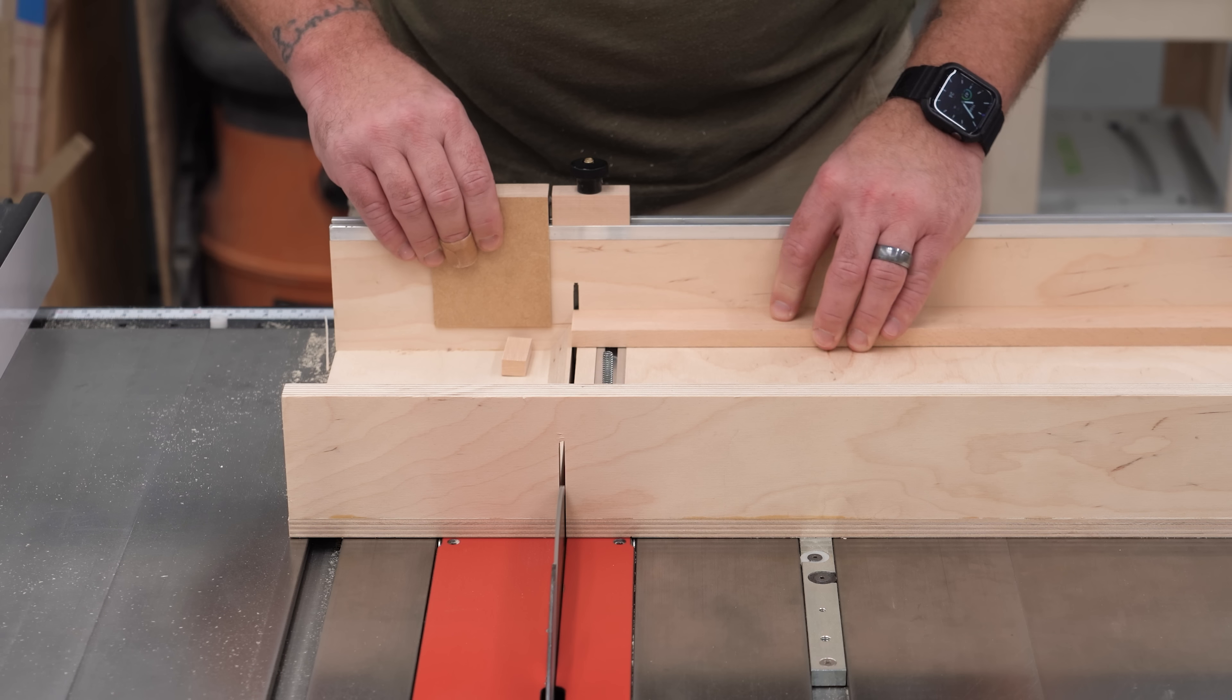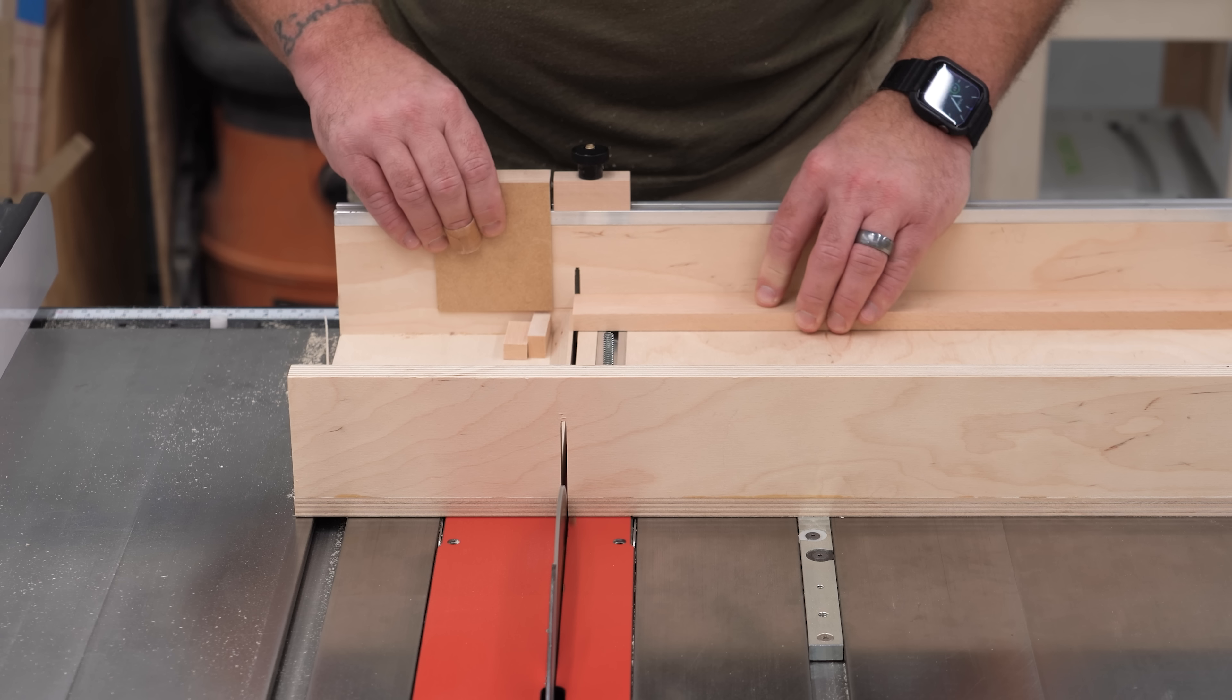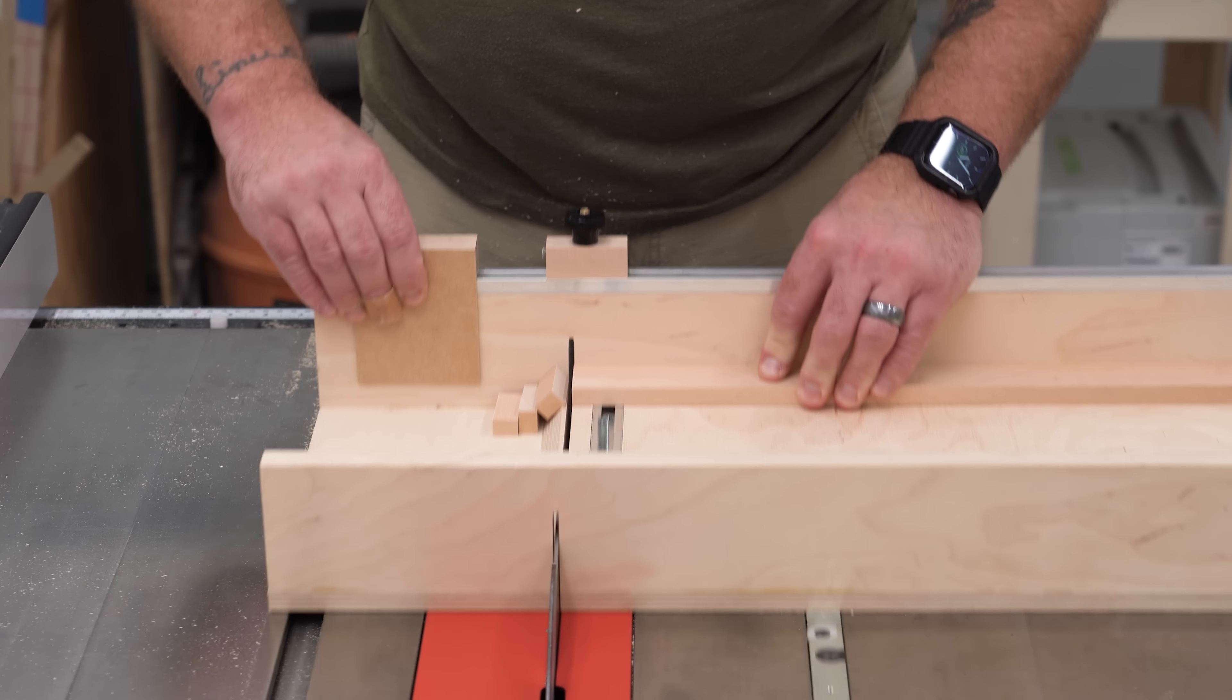The other situation where aluminum track is the only way to go is if you need a track on the ends or sides of plywood, like three quarter or 18 millimeter material, like for a stop block on a crosscut sled fence.